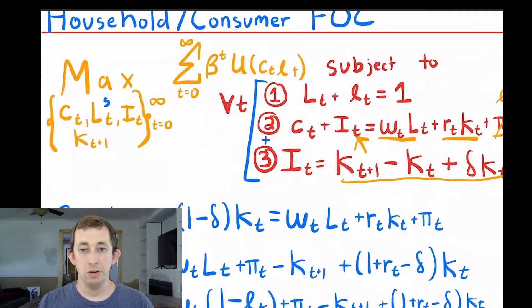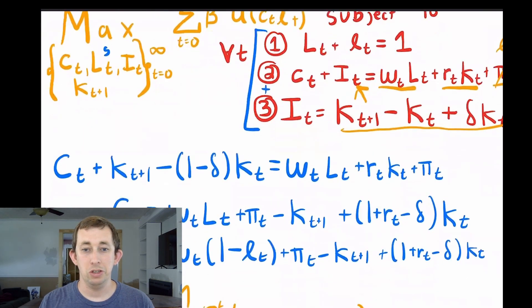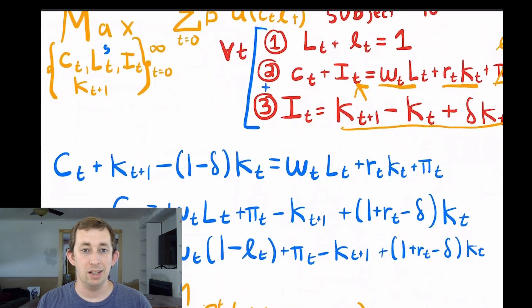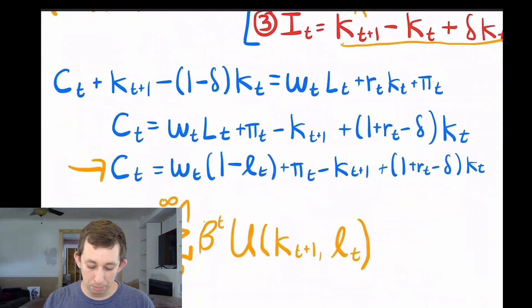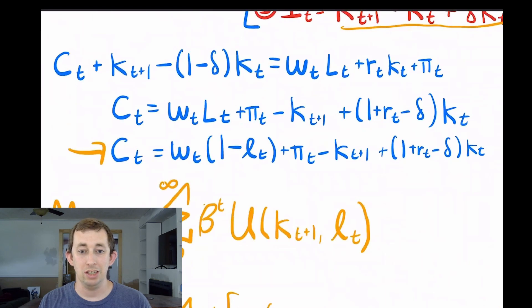Here's the household problem, you can see we've got a bunch of constraints going on. Before I take first order conditions, I want to make this problem easier to solve. First, I know profit is zero, so I don't have to worry about pi t. I also have an equation that gives me investment, and I have equation two which has investment in it. So I can substitute this guy into here and make my life easier. Then I'm going to put that all in terms of consumption so I can take consumption out of the problem. So I have ct equals that long thing right here that I'm going to plug into the utility function. Now my utility function is just a function of capital and labor where profit is really zero.